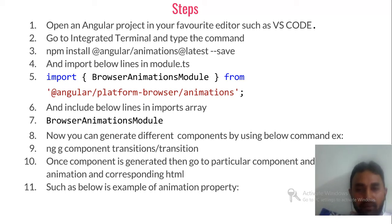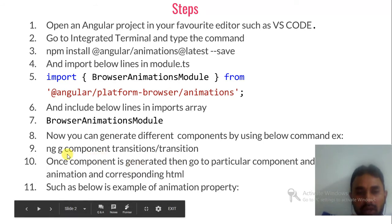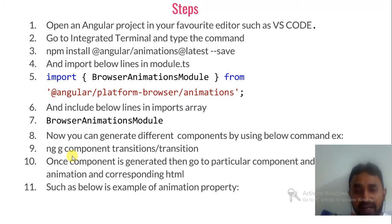Now you can generate components by using the below commands. Now we are jumping into the stage where you are generating the component to demonstrate. I have just generated three different components like transitions, keyframes and entering and leaving. So by using this command you can do so. That's the beauty of the Angular CLI where in order to generate the component, corresponding html file and corresponding css file it will do your job. ng g for generate, component is what you would like to generate, and transition is my folder and transition is my component name.